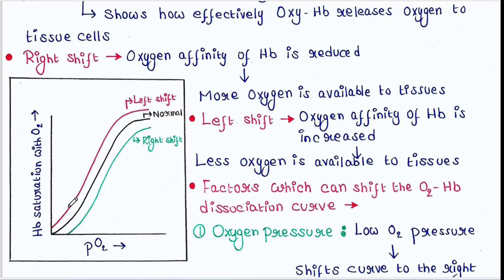The red curve represents the left shift. Here the oxygen affinity of hemoglobin is increased, meaning more oxygen is associated with the hemoglobin, so less oxygen is available to tissues.